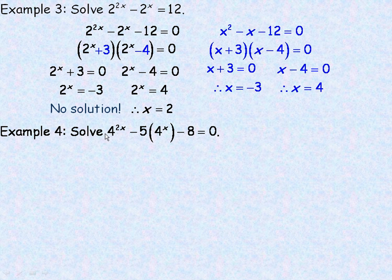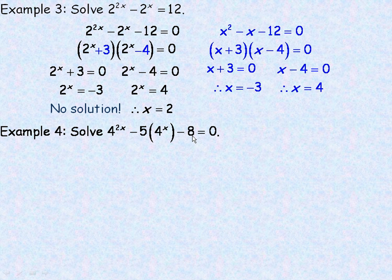The last example asks to solve 4 to the 2x minus 5 times 4 to the x minus 8 equals 0. This is also a quadratic type, but it won't factor — there are no numbers that add to negative 5 and multiply to negative 8. The factor pairs of negative 8 are: 8 and negative 1, 1 and negative 8, 2 and negative 4, 4 and negative 2 — and none of those pairs add to negative 5. But that doesn't mean there's no solution.